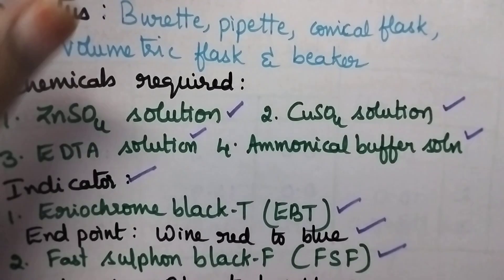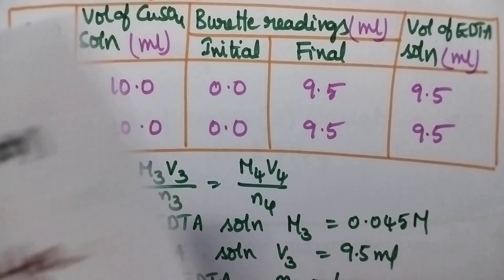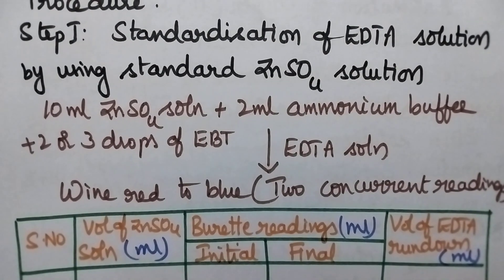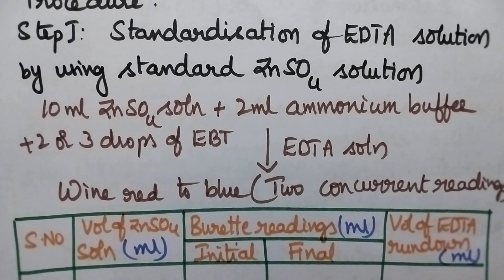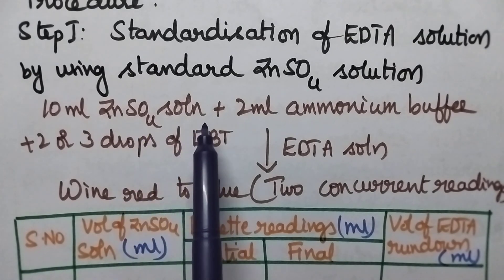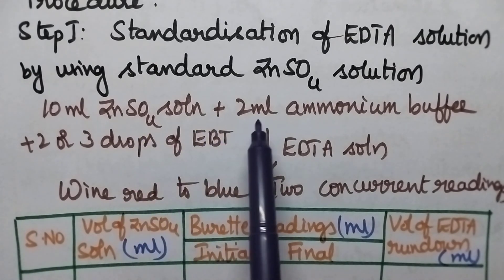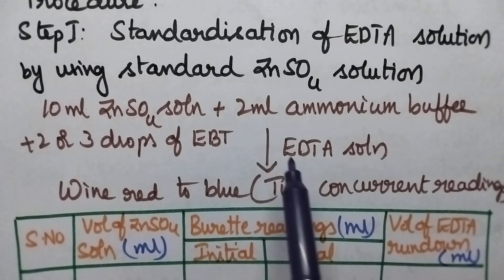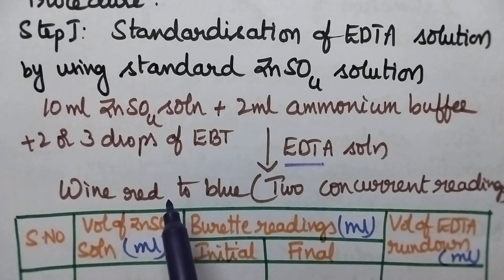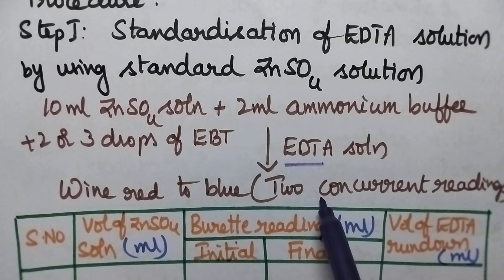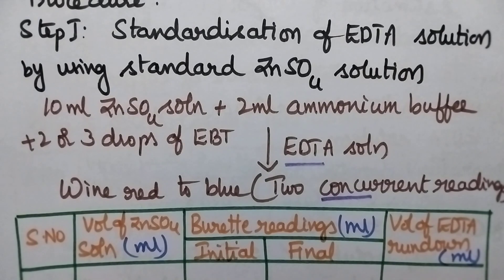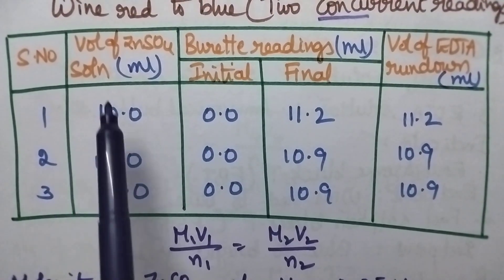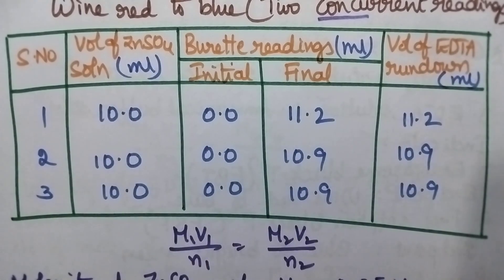The procedure involves two steps. The first step involves the standardization of EDTA solution using zinc sulfate solution. In this step, 10 ml of zinc sulfate solution is transferred into the conical flask; 2 ml of ammoniacal buffer is added and 2 or 3 drops of the EBT indicator is added, which is titrated against EDTA solution until wine red changes to blue color. The same titration is repeated until two concurrent readings are obtained, and a tabulation is drawn between the volume of zinc sulfate solution and the volume of EDTA run down.